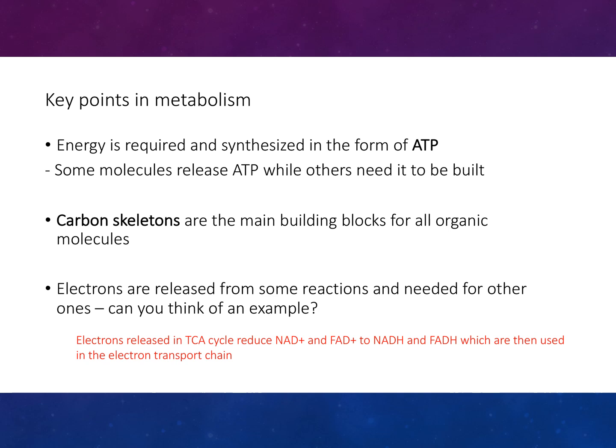An example: electrons released in the citric acid cycle reduce NAD+ and FAD+ to NADH and FADH2, which would then be used in the electron transport chain.